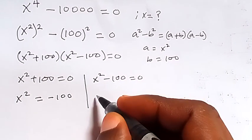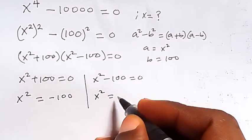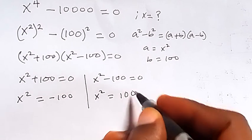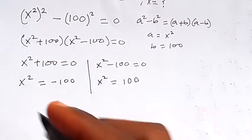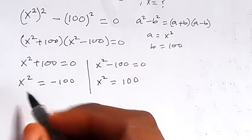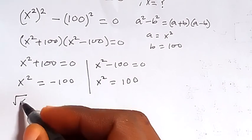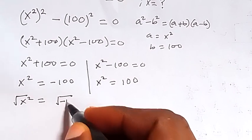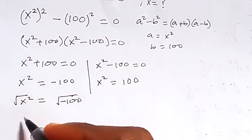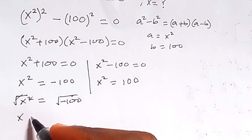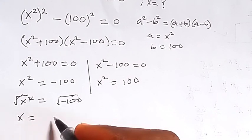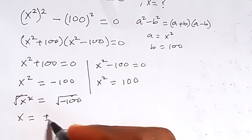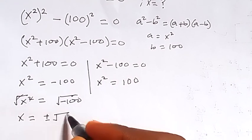And also from here, x squared will equal 100. Now to find x, we can take the square root on both sides. Square root of x squared equals square root of negative 100. Square cancels square root, so we have x equals plus or minus. We can separate this as square root of 100...